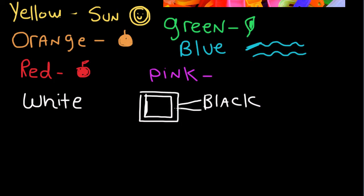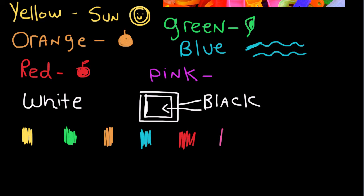Let's do a review of the colors that we learned. So this is yellow. This is green. This is orange. This is blue. This is red. This is pink. And this is white. And this is black.